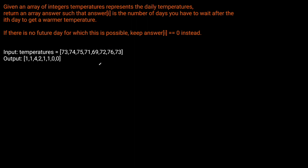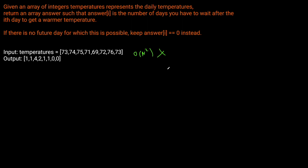So the naive solution to this problem, which we won't implement because it's actually going to be very slow, is to simply for each element in temperatures, search to the right of it and find how many steps it takes to find the next warmer temperature. So we'd start at 73 and then search to the right, and go until we find a day that's warmer, then do the same for 74, 75, and on and on. The problem with this solution is that it's going to be O(n²), which we don't want. We want to make use of information that we have so far to avoid multiple iterations through the array.